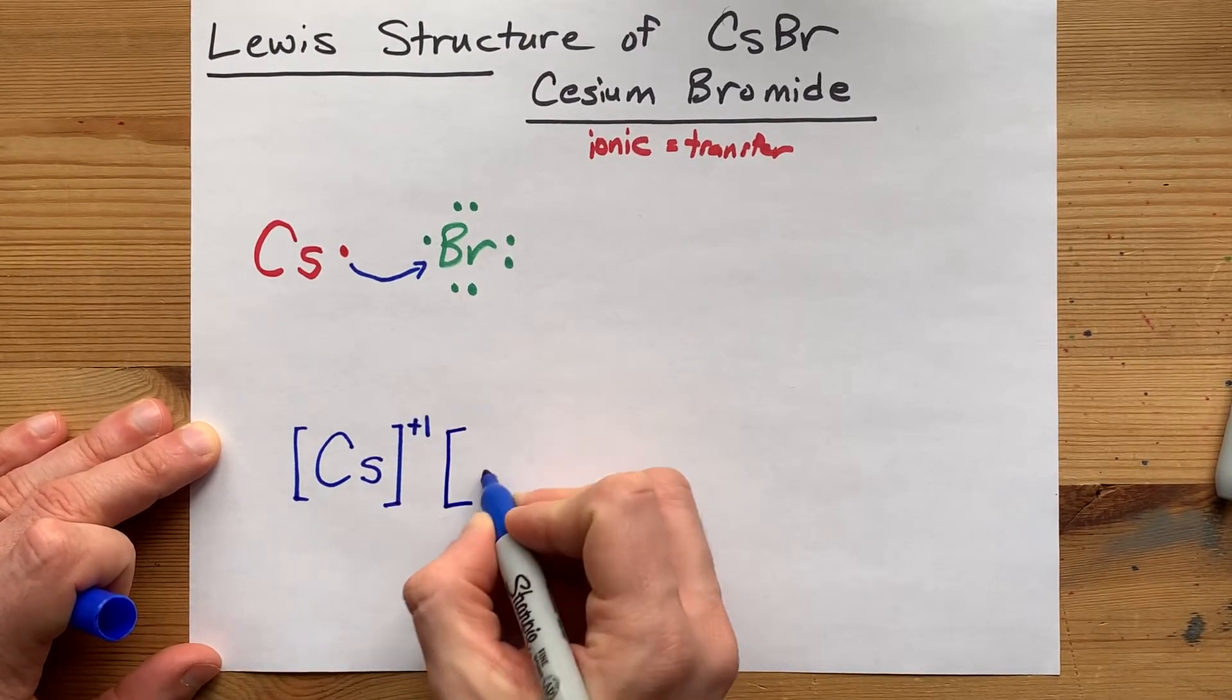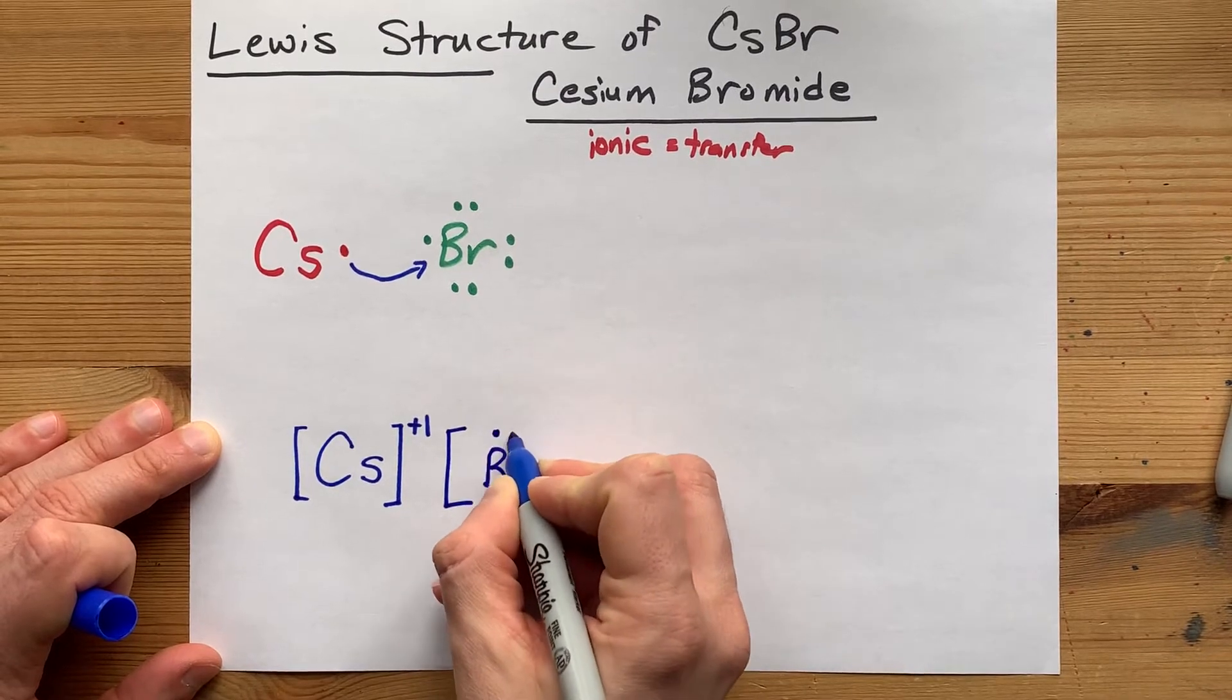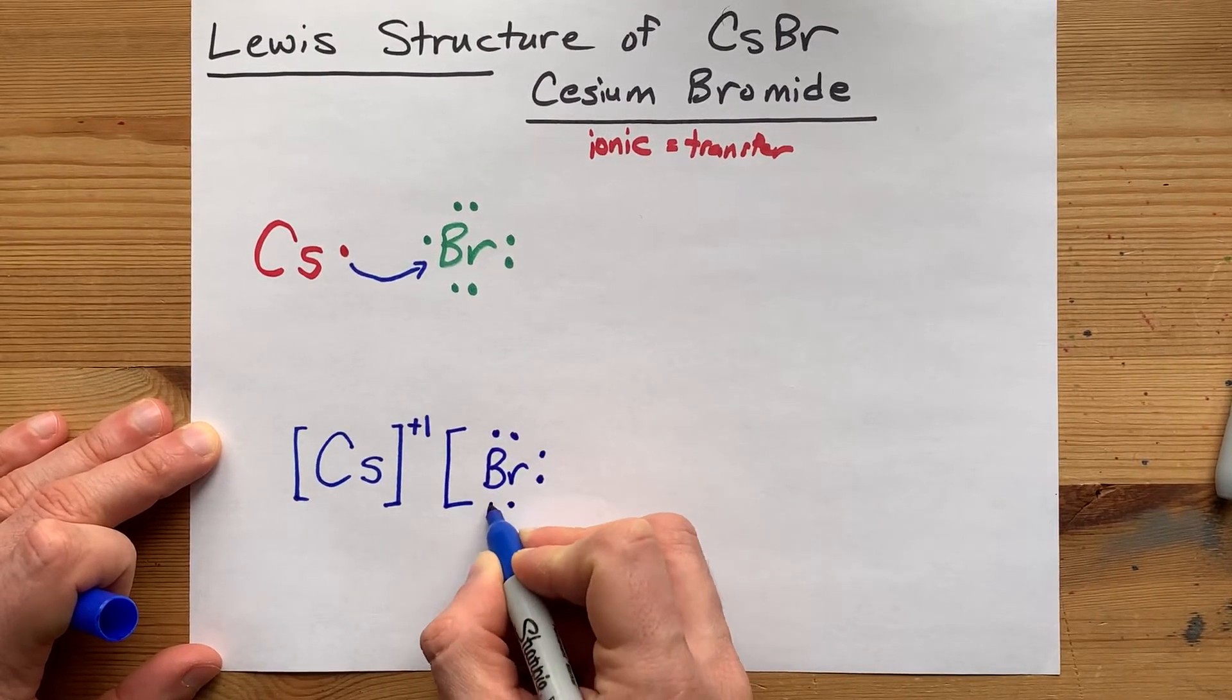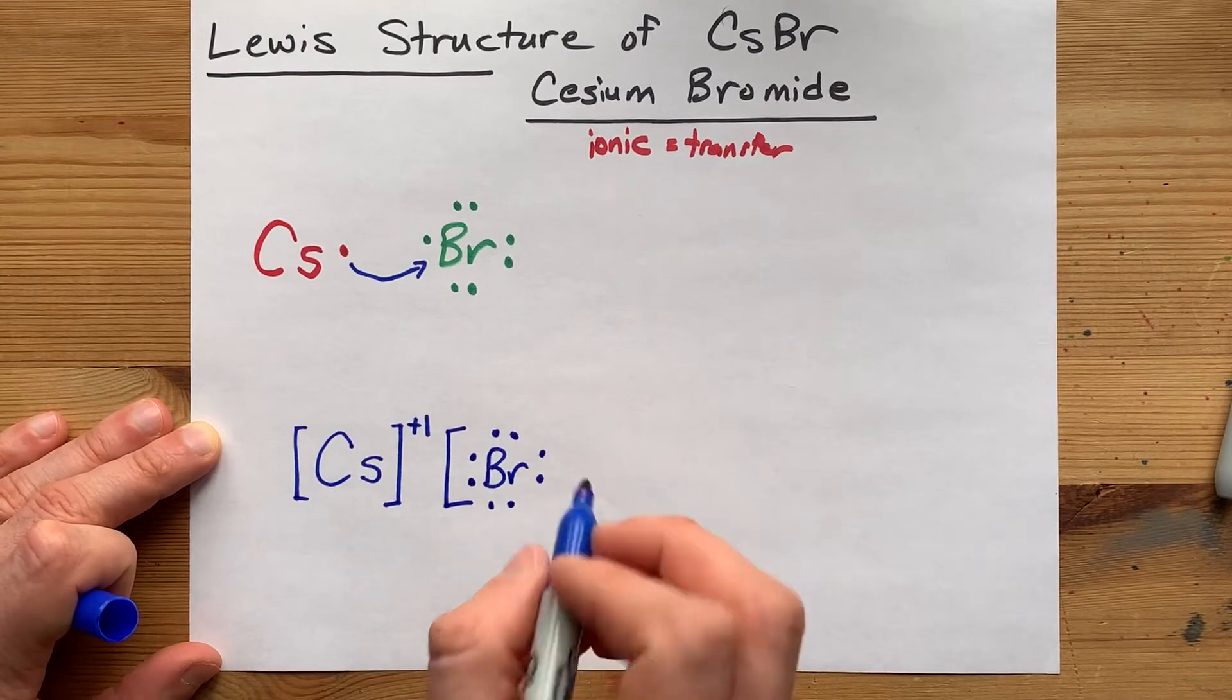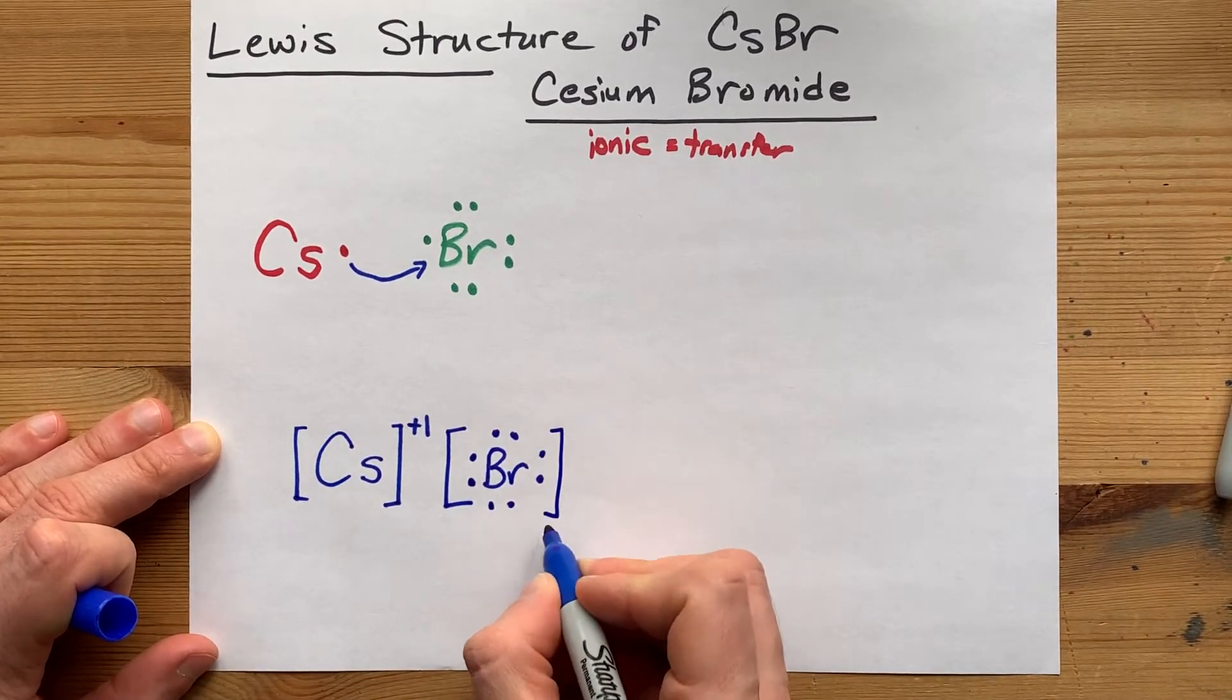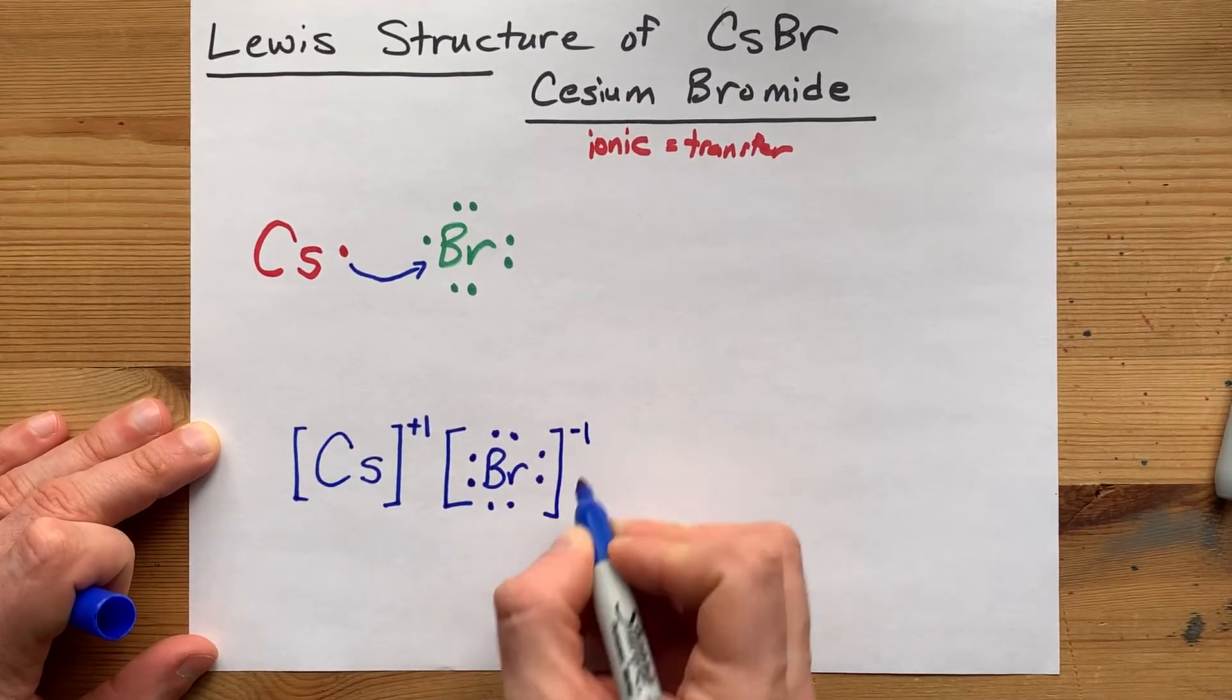And bromine, which had seven dots or electrons to start with, now has its eighth and it is stable as well. This gives it a charge of minus one.